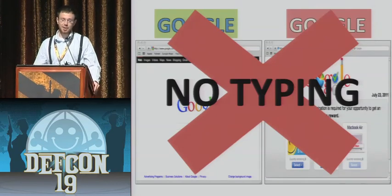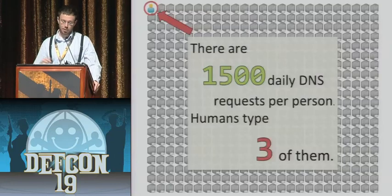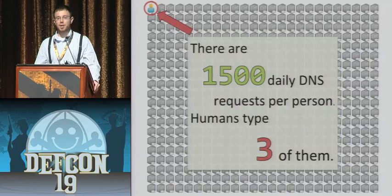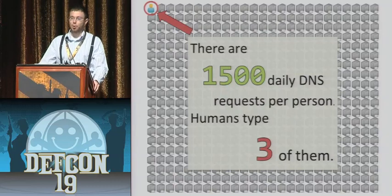The reason is that while humans do a lot of typing and make a lot of mistakes, computers make a lot more DNS queries. The graph on this slide is actually to scale. If you look at that top right corner, you see the little guy circled in red — that's the proportion of DNS requests that humans make compared to the proportion that computers make.